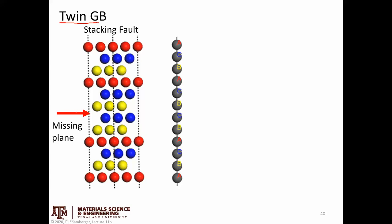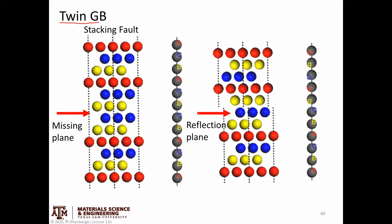The picture shown is not a twin grain boundary — this is an example of a stacking fault, where we have a missing plane. But it's pretty close to a twin grain boundary. Because in a twin grain boundary, we have one continuous perfect lattice structure, and then something like a reflection plane, and the lattice structure is reflected across that. So there's a defect here because I don't continue this A, B, C, A, B, C sequence — all of a sudden the order is reversed.